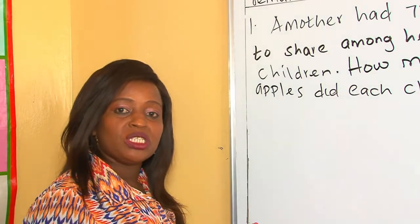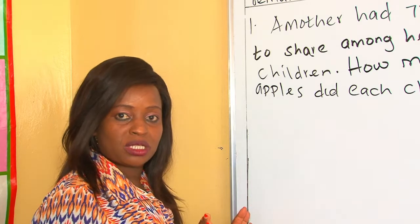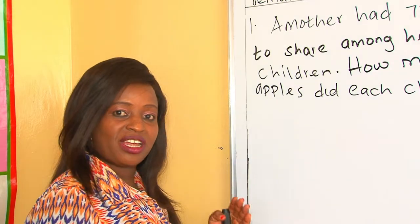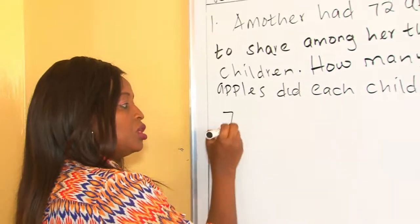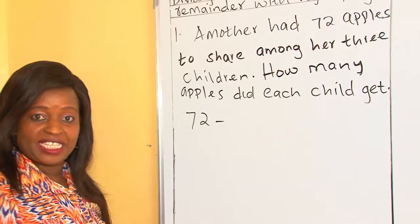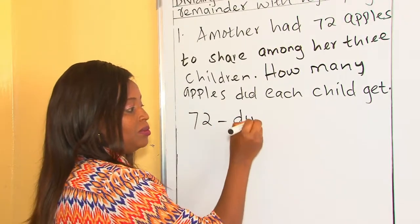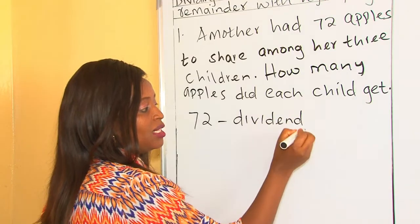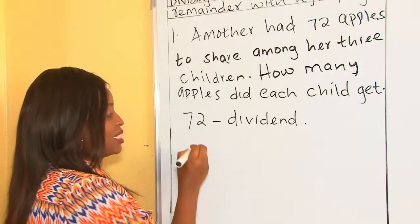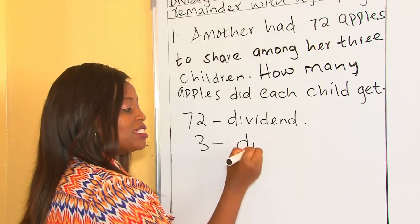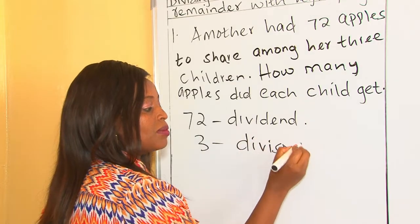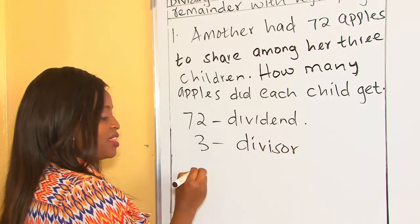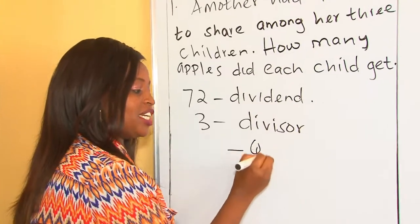We have been told she had 72 apples which she was supposed to share among her three children. So the 72 is what we call the dividend. That's our dividend, and 3 is what we call the divisor. The answer you're going to get is what we call the quotient.